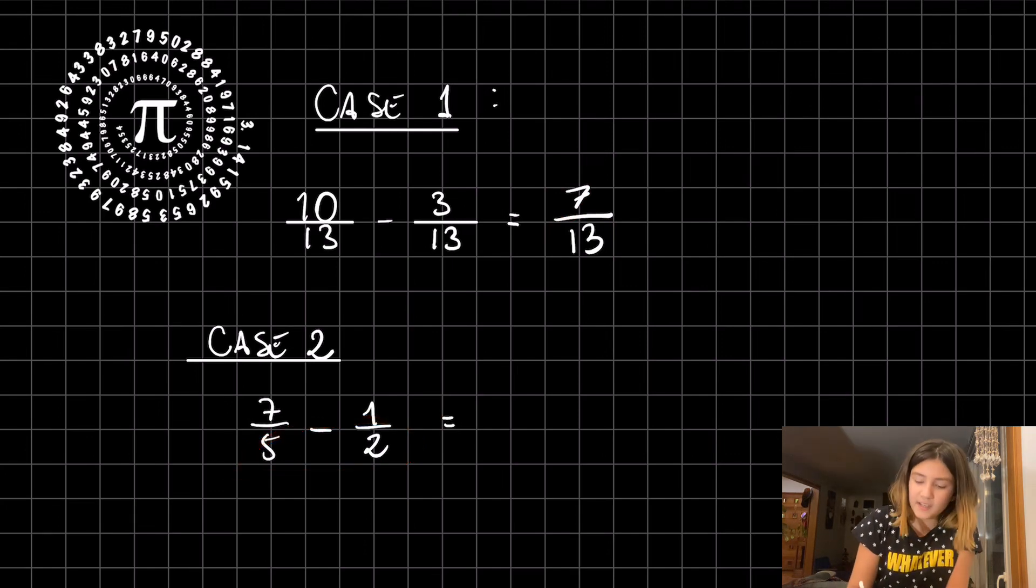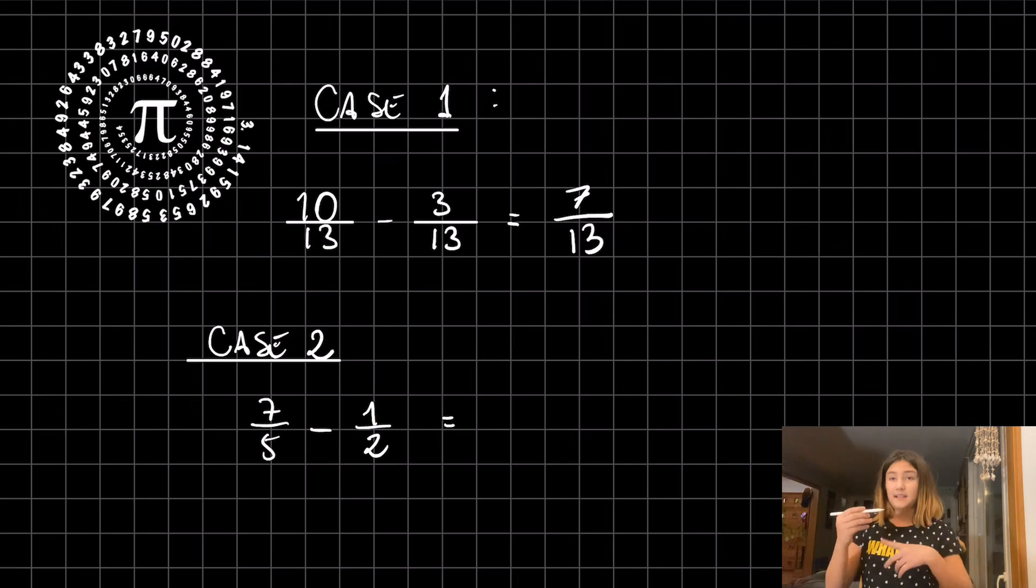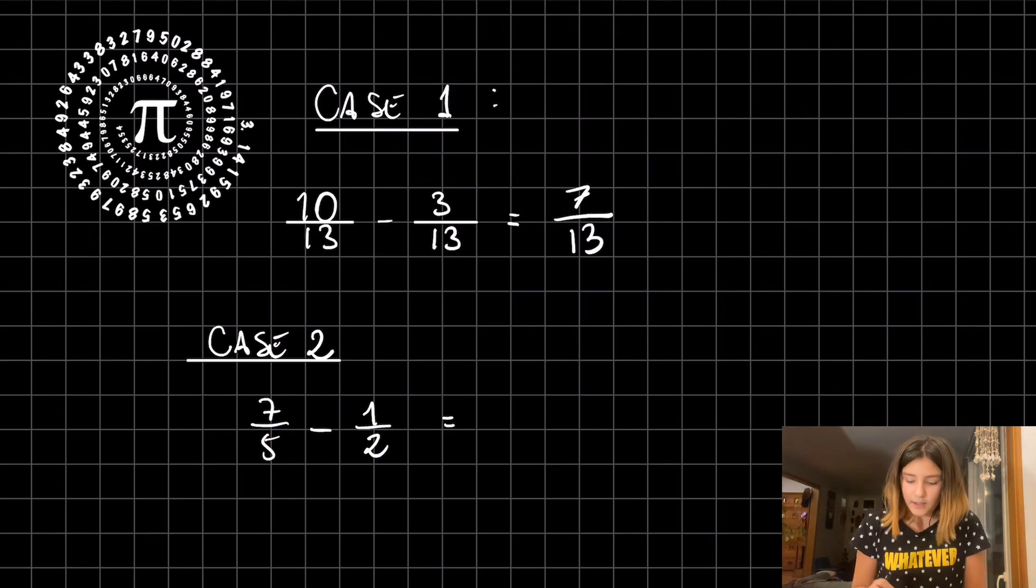In case two we have different denominators, so it's very similar to adding fractions because we're going to use the butterfly method.